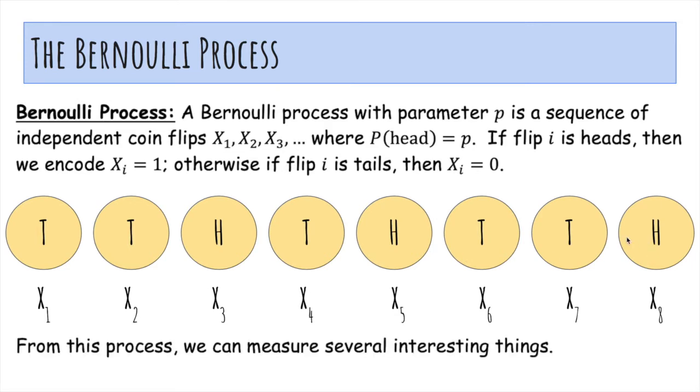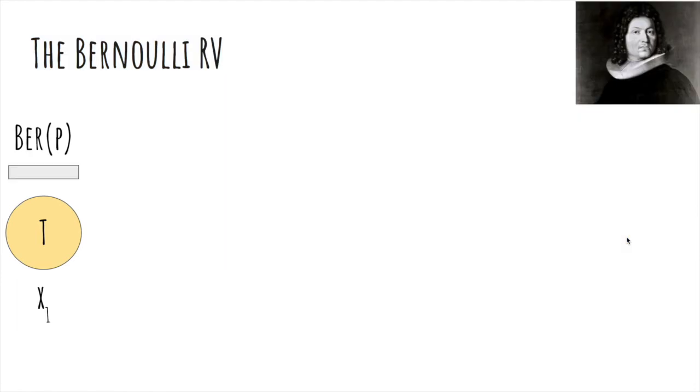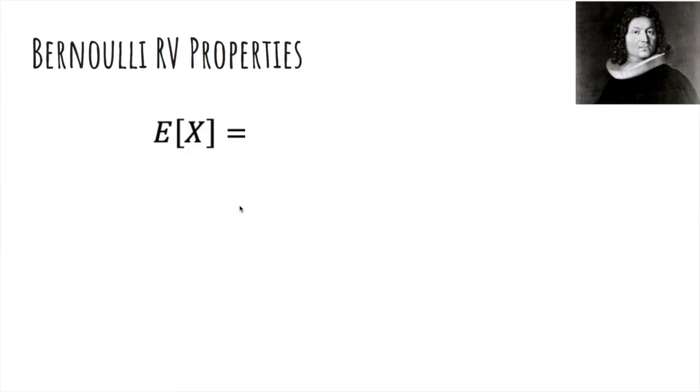From this process, we can measure several interesting things. One is called the Bernoulli random variable, and that's just the most fundamental random variable. Each individual coin flip is a Bernoulli random variable with parameter p. It's just 1 or 0. Here it's tails, so it's 0. Here it's tails, it's 0. Here it's heads, it's 1, and so on.